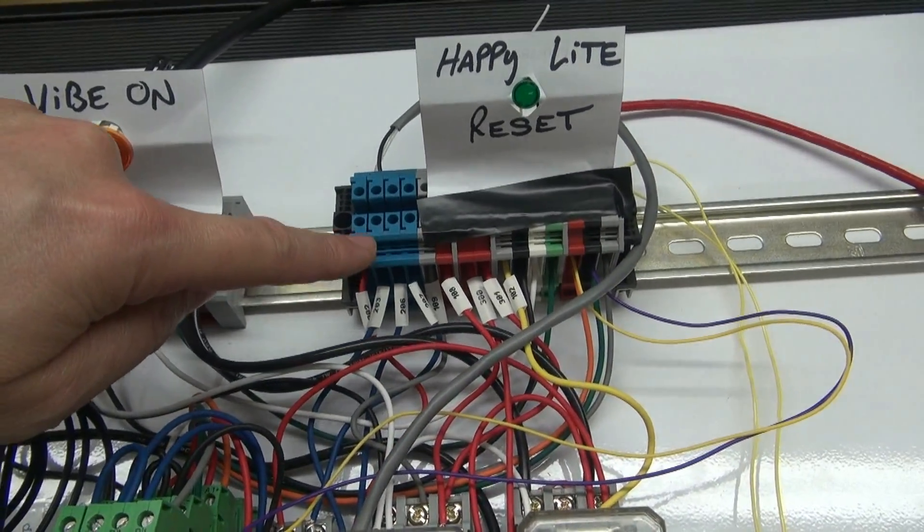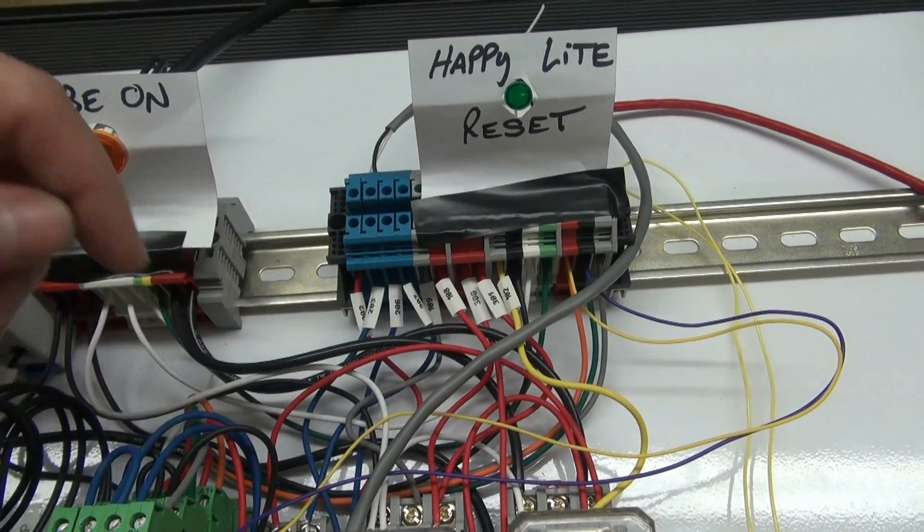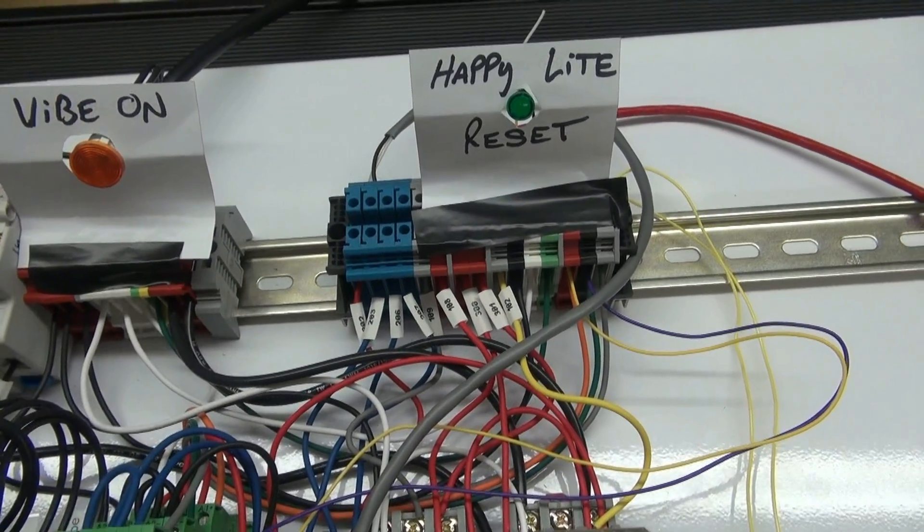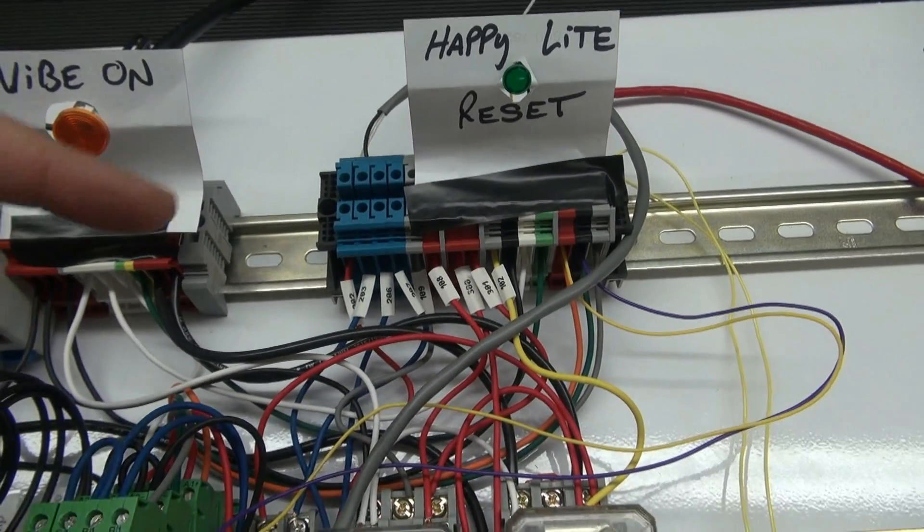This would be your AC distribution blocks, and over here is your operator input blocks for like your crimp mode, your e-stop, reset, etc.